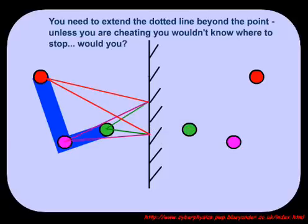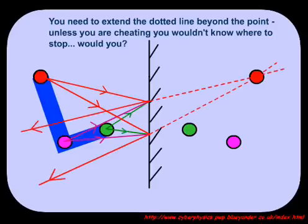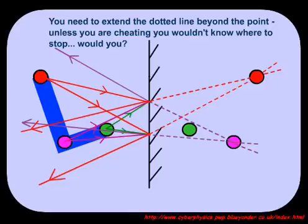We have to take two rays from each point to find out where they will appear to come from. It is the crossing of rays or construction lines that specifies the image point.